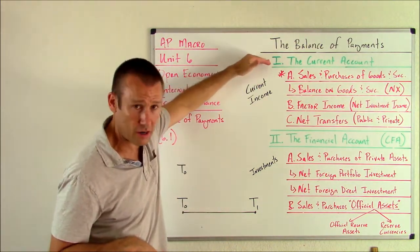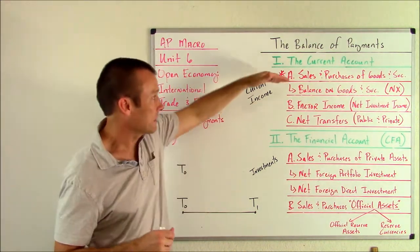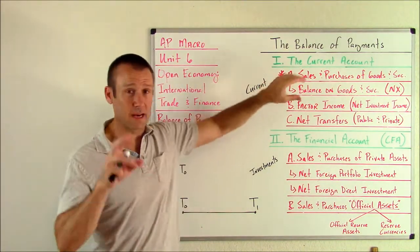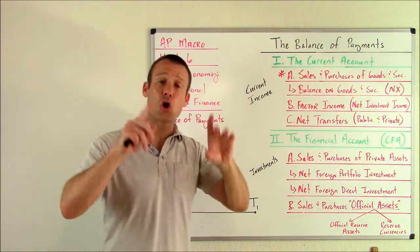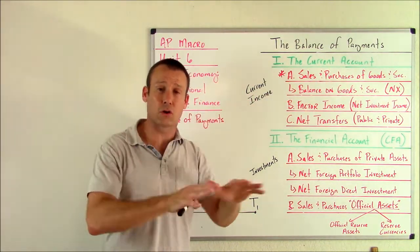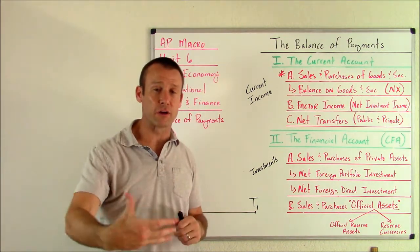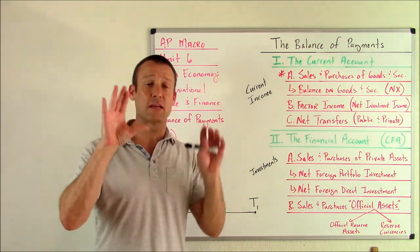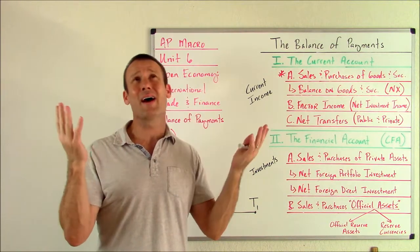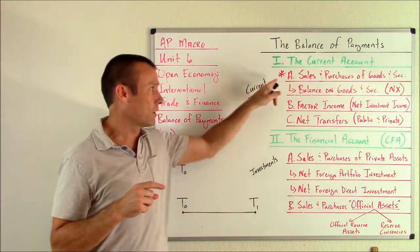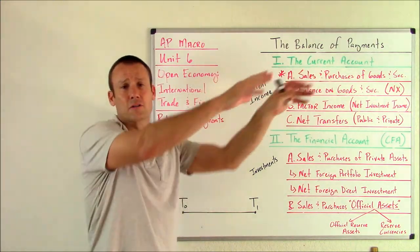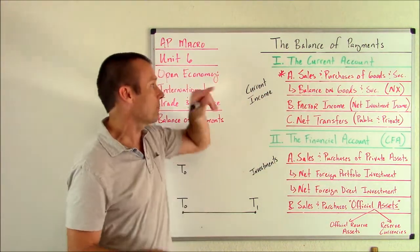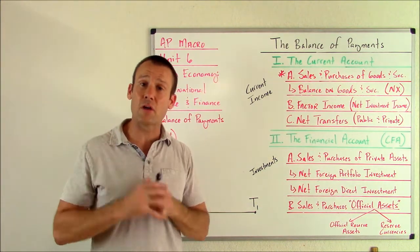Let's talk about the current account — that's where we record current income. How does a country, or people or organizations in a country, make current income? The number one way is to provide a good or service abroad. Make a good or service and sell it abroad; you do that, you get current income. That gets recorded here.